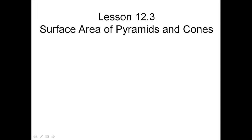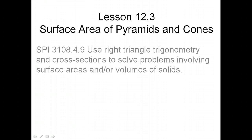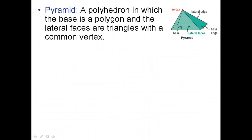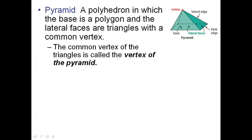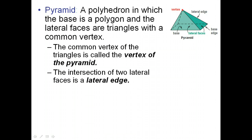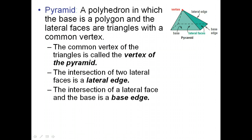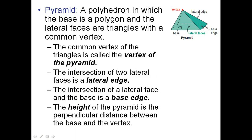Now we're going to look at surface area of pyramids and cones. A pyramid is a polyhedron which has a base as a polygon, and the lateral faces are triangles with a common vertex. The common vertex of the triangles is called the vertex of the pyramid. The intersection of two lateral faces is a lateral edge, and the intersection of a lateral face and the base is called a base edge. The height of the pyramid is the perpendicular distance between the base and the vertex.